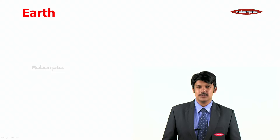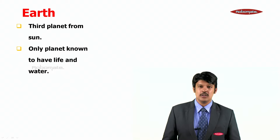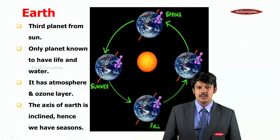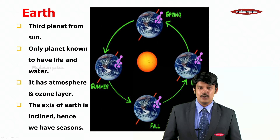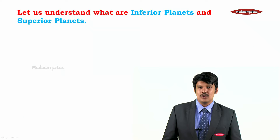Let us now learn about our mother planet, Earth. The third planet from the sun is the Earth — the only planet known to have life and water. It has an atmosphere and an ozone layer, which is the layer covering the planet. The axis of Earth is inclined; hence, we have seasons, allowing us to experience different seasons.